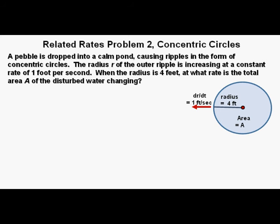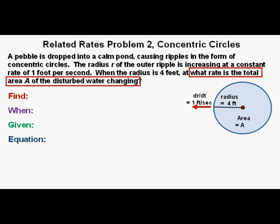These letters stand for Find, When, Given, an Equation — F-W-G-E. And what are we trying to find? The rate that the area of the circle is changing. In calculus language we call this rate dA/dt. For "When," we see that it's when the radius of the circle is 4 feet in length, so we call this R equals 4 feet.